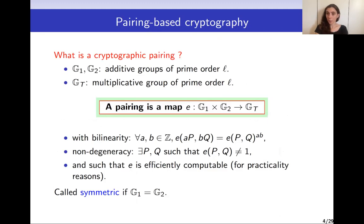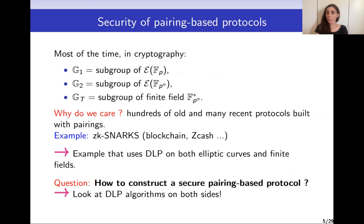A pairing is a map between the product of two additive groups into a target multiplicative group GT. The map has a few properties it needs to satisfy: first it has to be bilinear, non-degenerate, and for practicality reasons we want it to be efficiently computable. Pairings have been used in older protocols and in more recent protocols such as ZK-SNARKs, which are applicable in blockchain, Zcash, etc.